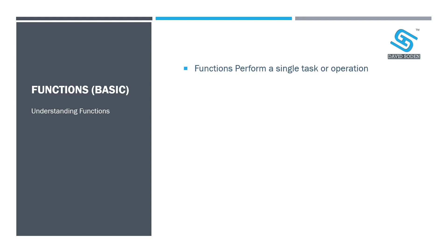A function basically performs one item, one task, one objective. For example, if you had a series of instructions like your morning routine — you get out of bed, you go to the bathroom, then you brush your teeth — each one of those is a task. Get up: that's one function. Go to the bathroom: that's another function. Brush your teeth: that's another function.